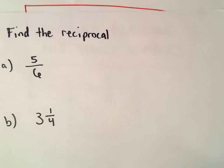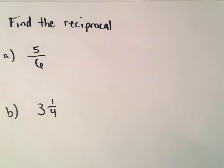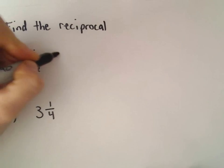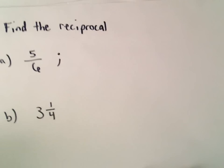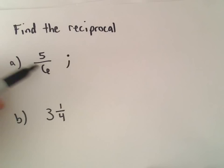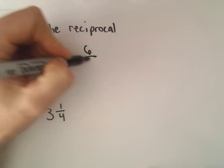So speaking of flipping fractions, let's find the reciprocals of each of these numbers. The first one's relatively straightforward. To find the reciprocal of 5 over 6, we just flip it, 6 over 5.